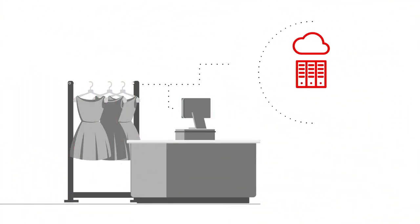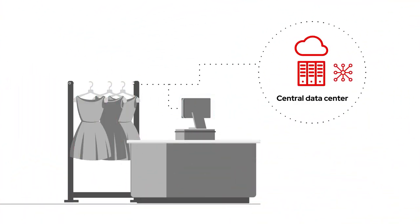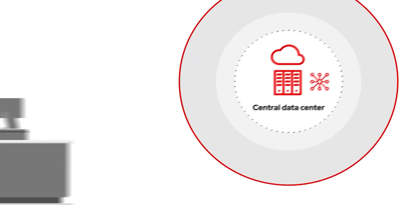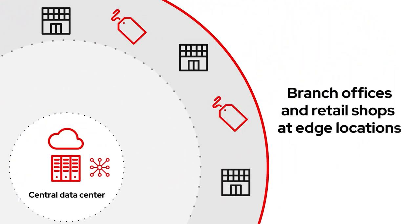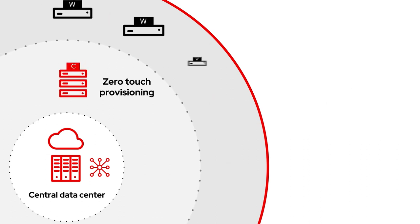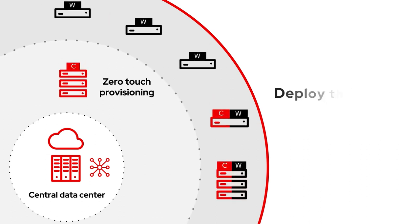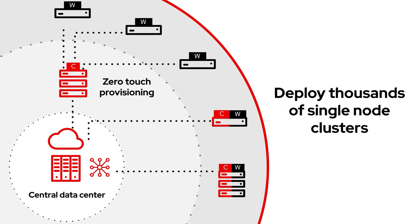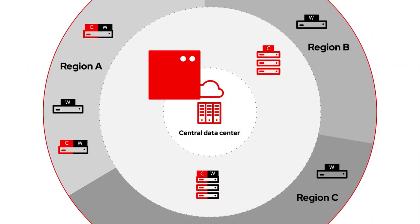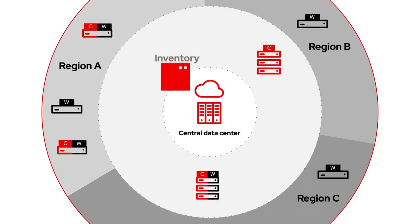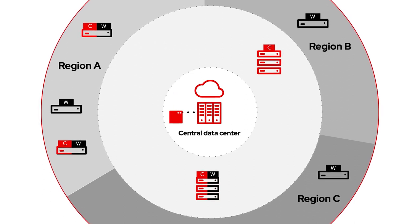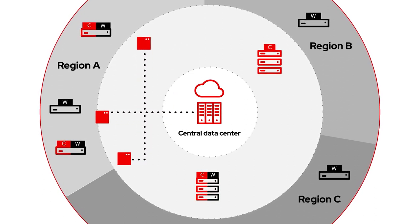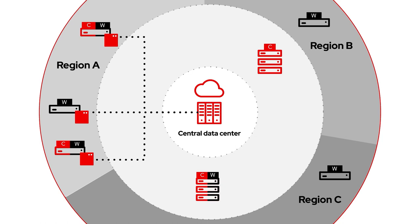For example, one hub cluster in a retailer's centrally located data center can manage hundreds of smaller shops located in different cities, states, or even countries, using capabilities like zero-touch provisioning to automate deployment of thousands of single-node OpenShift clusters at the edge. Labels can be applied to specific applications, like an inventory app, so that it can be deployed in a targeted location or region.